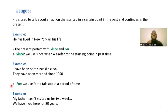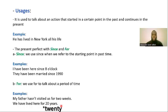We use 'for' to talk about a period of time — the whole amount of time that someone has spent doing something. For example: 'My father hasn't visited us for two weeks.' It has been two weeks since he visited. Another example: 'We have lived here for 10 years.' We just give the whole amount of time, without mentioning the specific starting point in the past.